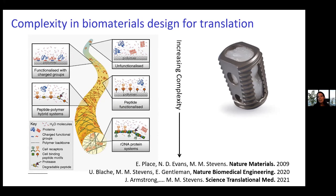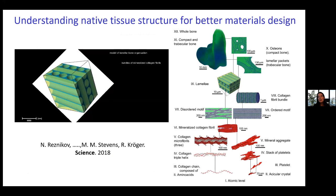That image on the top right is a material system from Medtronic — a product called Infuse — which has a collagen sponge in the center that delivers very high doses of a bone-stimulating growth factor. The delivery of that growth factor is in too-high doses compared to what's physiologically normal and leads to side effects. We want to really think about delivering the right kind of signals in the right concentrations and temporal features, and this requires a lot of engineering.